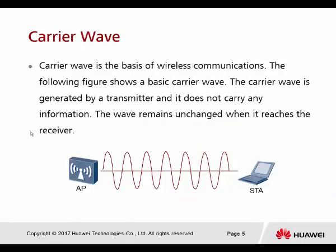This is the carrier wave. The carrier wave is the basic of wireless communication. The following figure shows the basic carrier wave — this is what the carrier wave looks like. The wave is generated by the transmitter and does not carry any information, so it remains unchanged when it reaches the receiver.